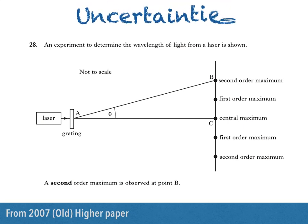Hi there. In this video I'll be answering a question about uncertainties — calculating the random uncertainty in a number of readings and expressing it as either an absolute or percentage uncertainty. The question relates to an experiment on interference, so I'll be explaining that too. Here's the question from the 2007 old higher paper.